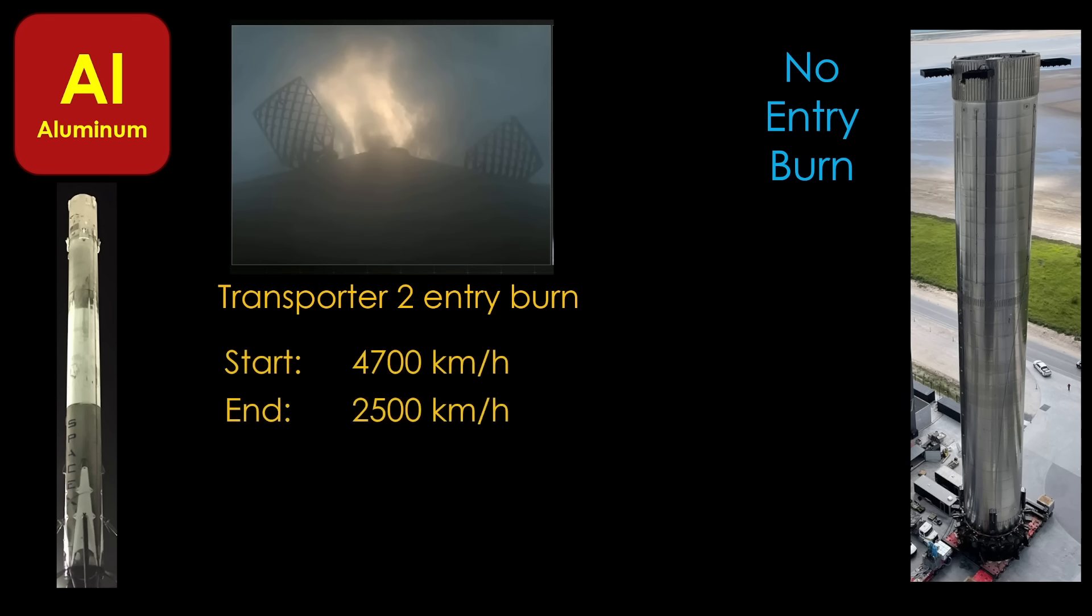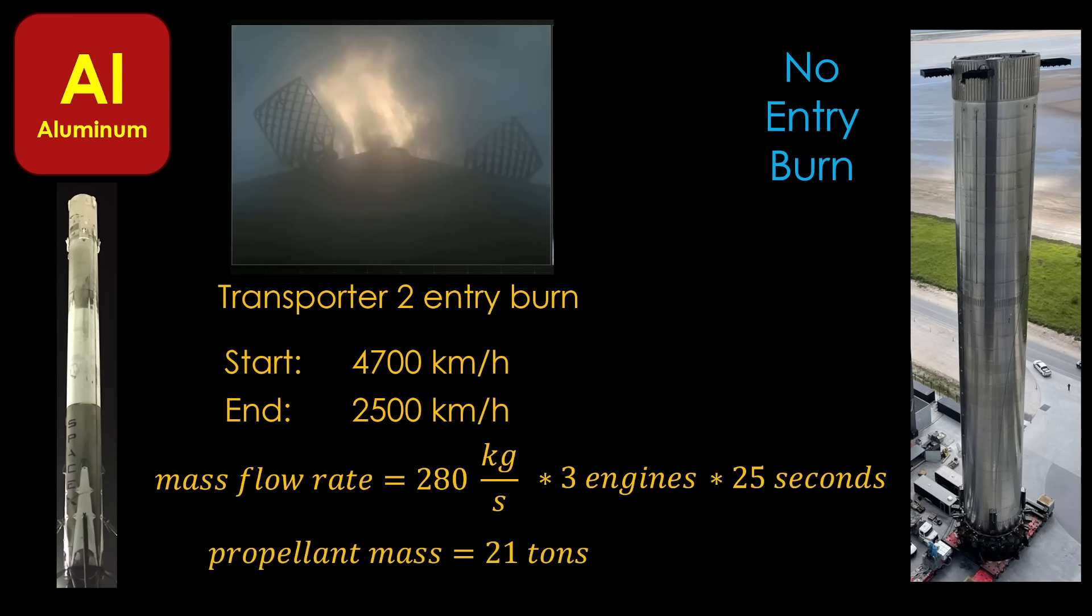On the Transporter 2 launch, the booster was traveling at 4700 kilometers per hour at the start of the burn, and only 2500 kilometers per hour at the end. That burn takes off about half the velocity of the stage, and therefore about 75 percent of the kinetic energy. We can do some rough math on the cost of the burn. The Merlin engine burns about 280 kilograms of propellant every second, and this burn is three engines and goes for 25 seconds. That means it burns about 21 tons of propellant. That 21 tons is about 70 percent of the empty mass of the booster.